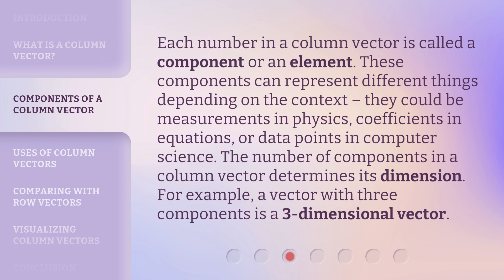The number of components in a column vector determines its dimension. For example, a vector with three components is a three-dimensional vector.